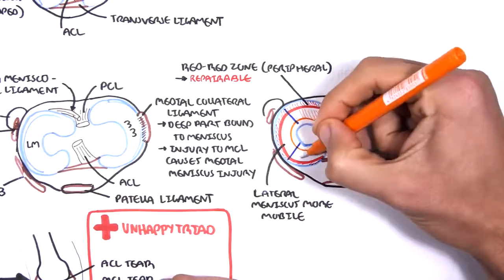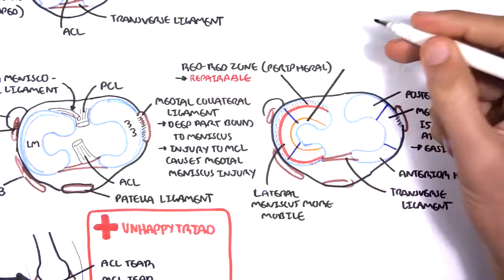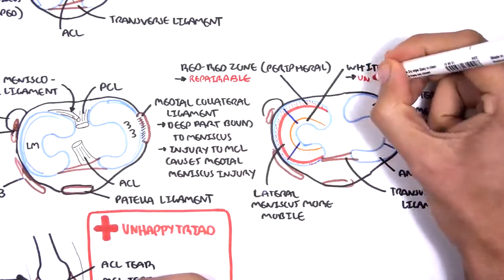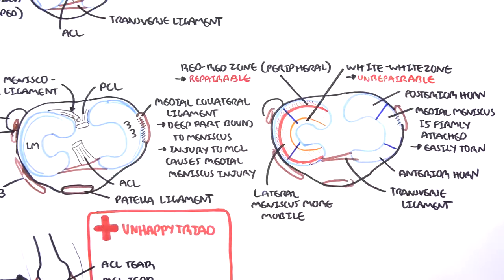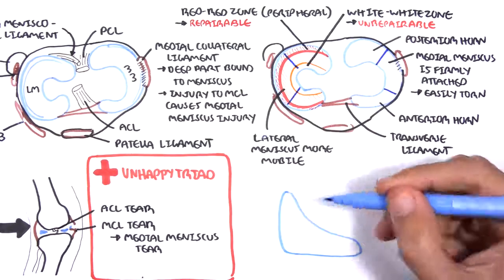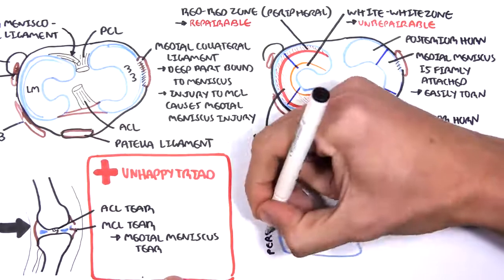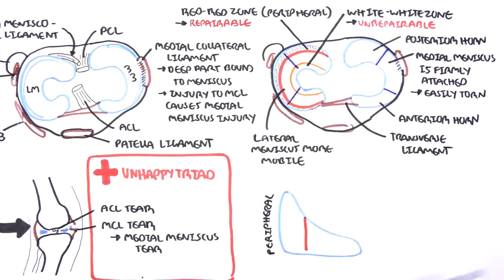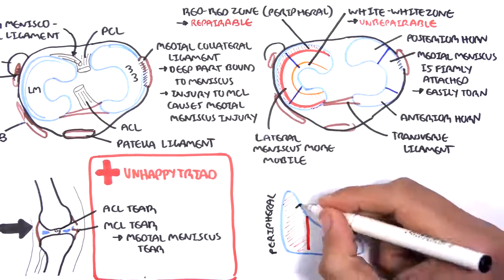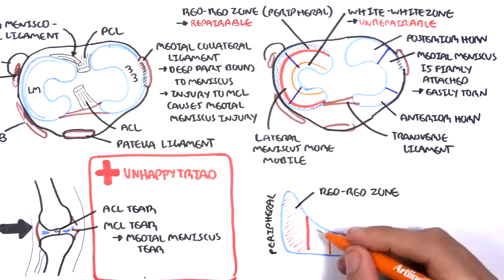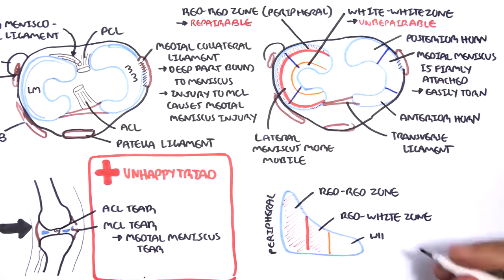The inner third is the white white zone. This is an avascular zone. There is no blood supply, and so it is unrepairable if damaged. Let's now look at the meniscus from a different view. Let's cut a slice of the meniscus from the side and look at it from that angle. Here again is your peripheral third, the red red zone. The middle third is called the red white zone and the inner third is the white white zone.